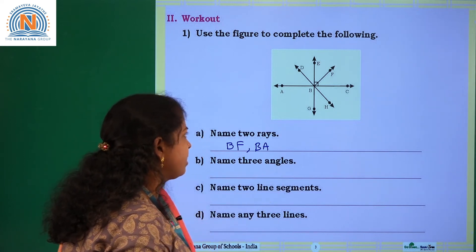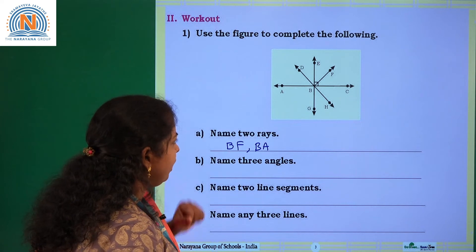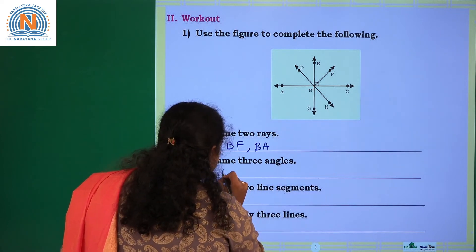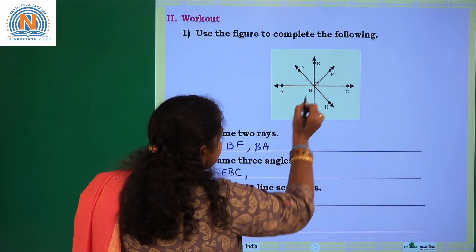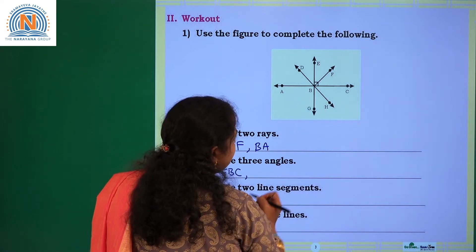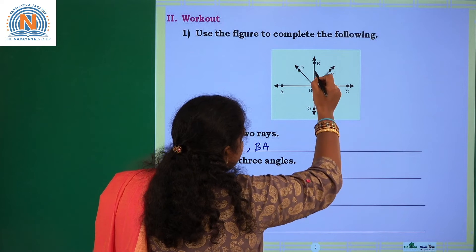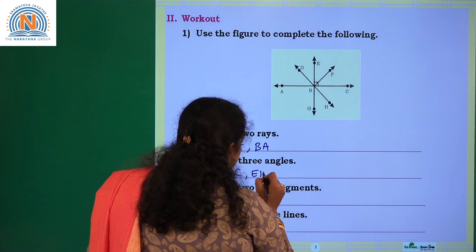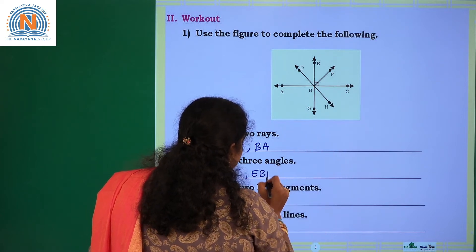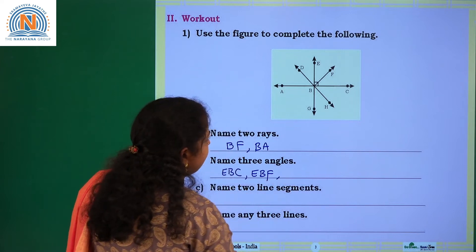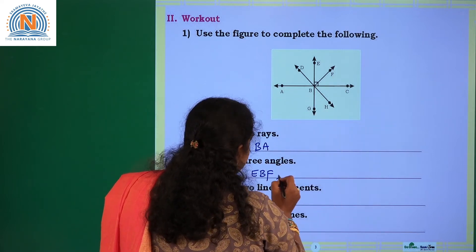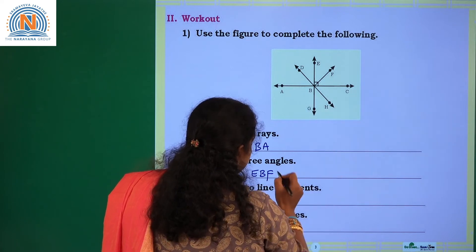Name three angles. What angles can you observe here? EBC is one angle, as the angle symbol is clearly given. You can write EBC, EBF, and also FBC. These three are the angles from the figure.